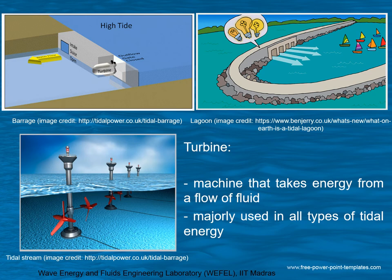All three types make use of a turbine to generate electricity. A turbine is a machine that takes energy from a flow of fluid — in this case, water. To give you a visual of the turbine, you can see the red-colored turbine shown under the picture of the tidal stream.